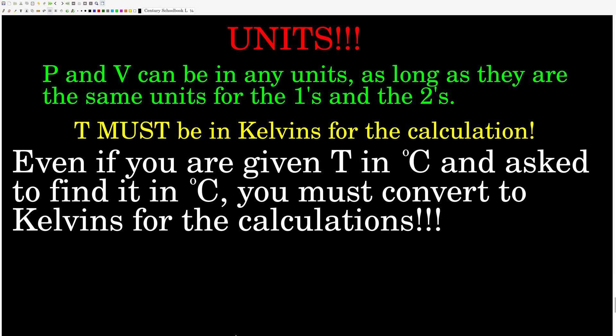Real quick, before I go, one last word on units. N is always moles, period. P and V can be in any units as long as they're in the same units for the 1s and 2s — if P1 is in torr and P2 is in torr, just leave them as they are; if V1 is in milliliters and V2 is in milliliters, just leave them as they are. However, temperature must be in Kelvin for the calculations. Even if you're given the temperature in Celsius and asked to find T2 in Celsius, you still have to convert to Kelvin to do the calculations and then convert back if you have to.